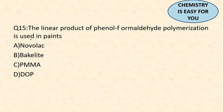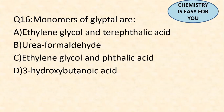Question 15: the linear product of phenol-formaldehyde polymerization used in paints. The answer is Novolac. You might confuse it with Bakelite, which is also a phenol-formaldehyde resin and a cross-linked polymer, but Bakelite is not used in paints. The one used in paints is Novolac. Always read carefully what usage of the polymer is specified in the question.